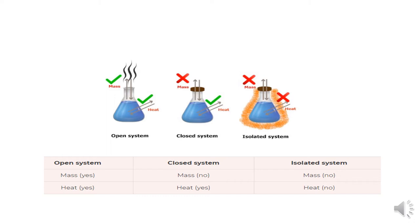A good example of a closed system is gas contained in a cylinder. The boundary itself — the piston — changes position as the gas expands or contracts. The piston moves from TDC to BDC. Mass is constant within the cylinder; only heat transfer takes place. This is the best example of a closed system.